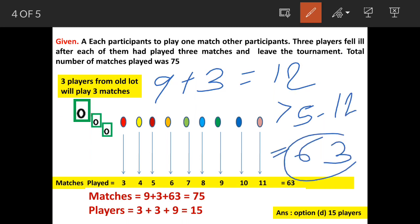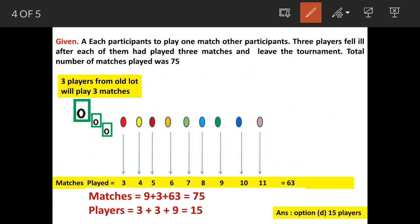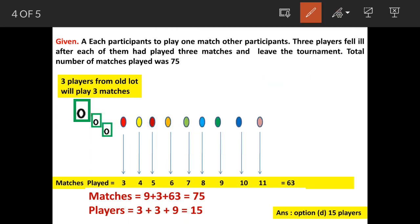We now need to find how many additional players are needed to complete the 63 remaining matches. Adding one more player, that player plays four matches — one against each of the four existing participants. Adding a second player, they also play four matches: one against each previously added participant.